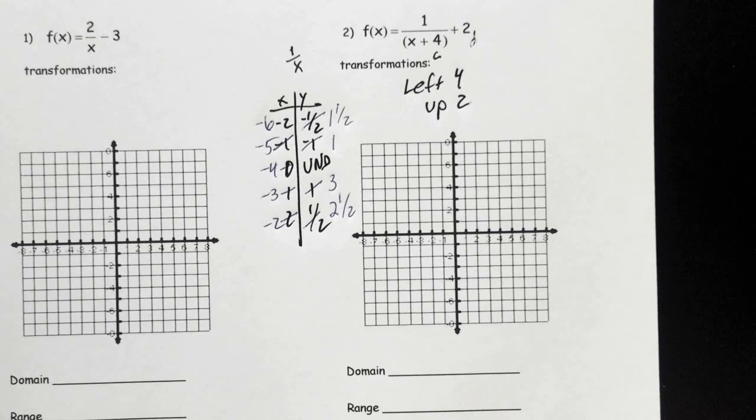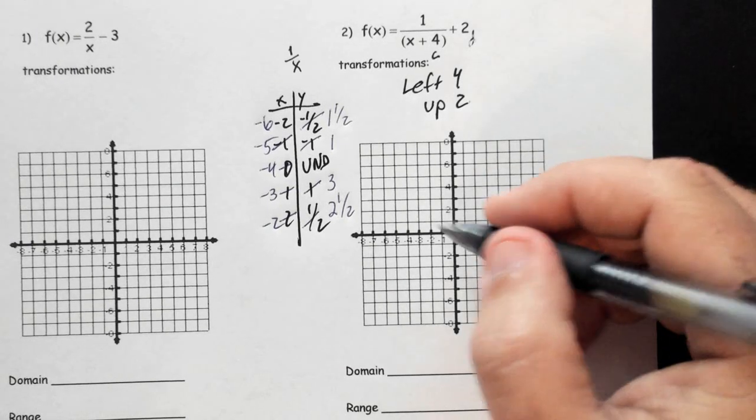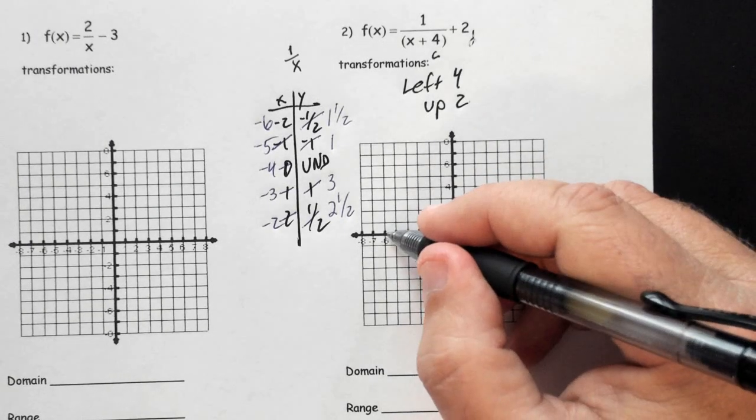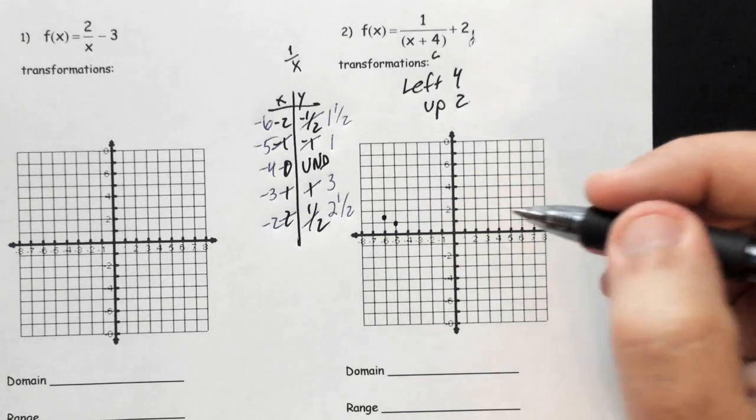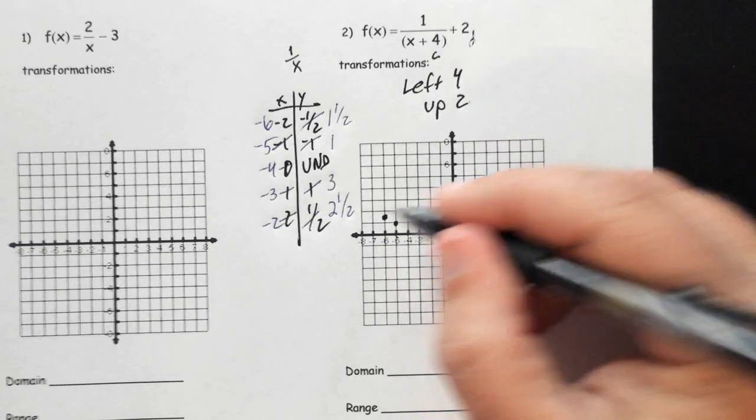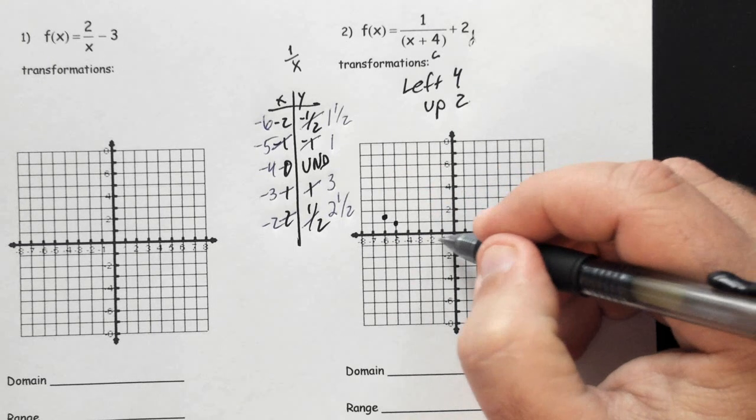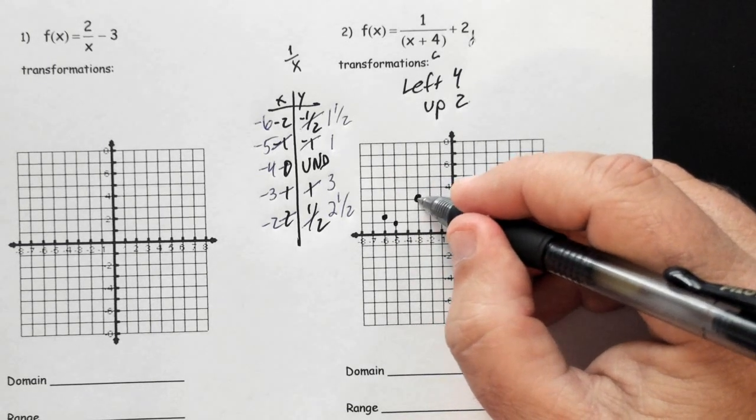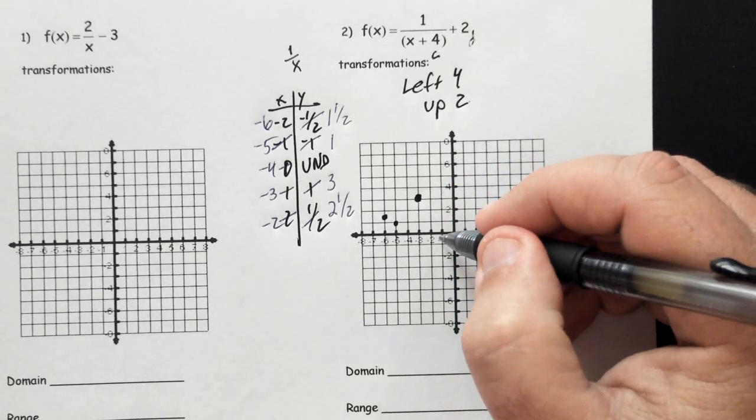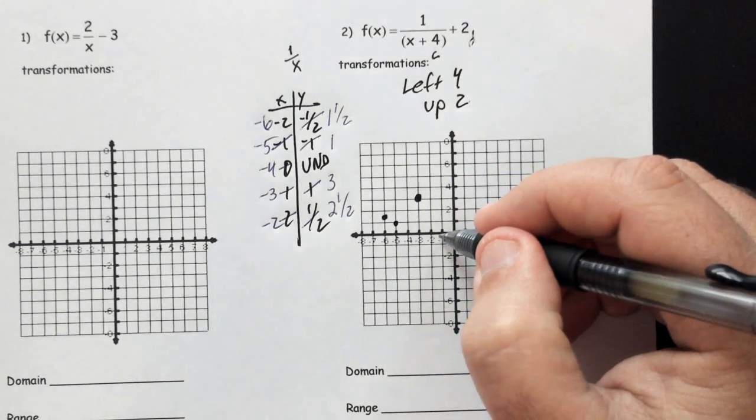Now what we want to do is we want to be able to plot those points. So if we plot those points, we're going to have (-6.5, 1.5), (-5, 1). Those are those two points. And then we're going to plot (-3, 3) and (-2, 2.5).